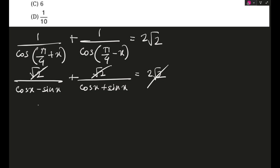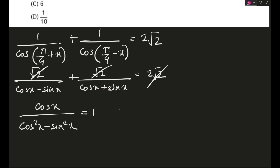The 2s cancel, so we have cos x / (cos²x − sin²x) = 1. In other words, we can form a quadratic: taking sin²x as 1 − cos²x, this comes out to be 2cos²x − cos x − 1 = 0.